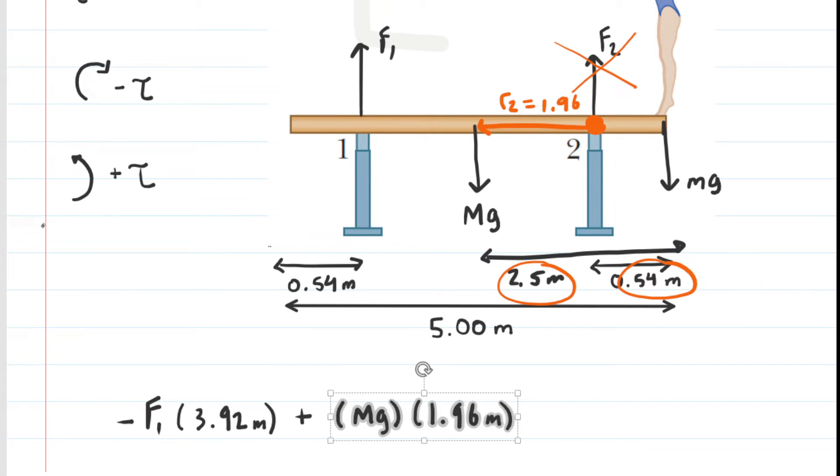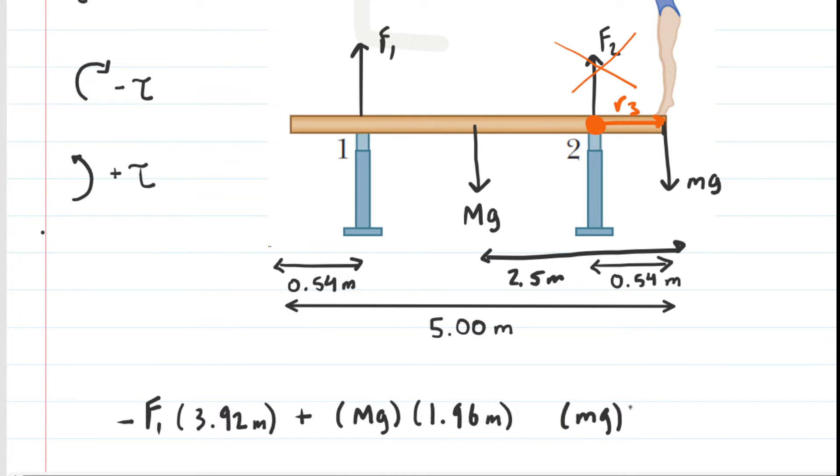We can move on to the third torque. F2 produces no torque, so we can disregard that. For lowercase Mg, we would draw our R vector from the pivot point over to where the force is located, perhaps we can call that R3. You can see that the distance R3 is just the distance from that support to the end of the beam, which was 0.54 meters. So for the force, it's lowercase Mg multiplied by the distance of 0.54 meters. The angle here between R3 and the force vector is 90, so sine of 90 is 1. As the gymnast's weight presses down at the right end of the beam, that would cause the beam to rotate in a clockwise orientation. So that is going to be negative torque.